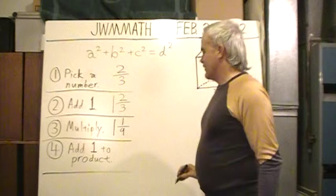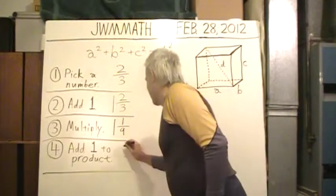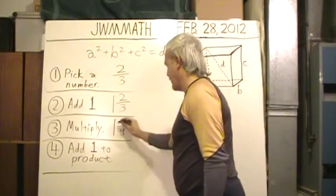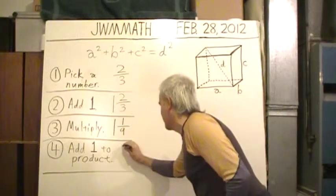And finally, add one to that product. One plus one and one-ninth. Just add the one onto the whole number part of that mixed number.